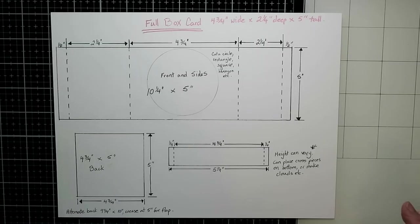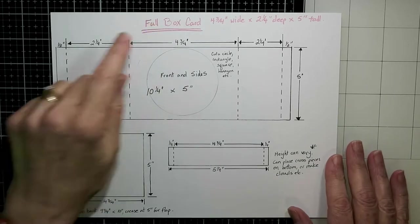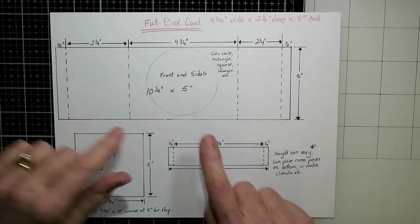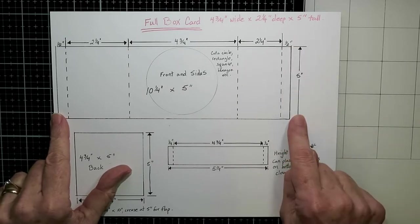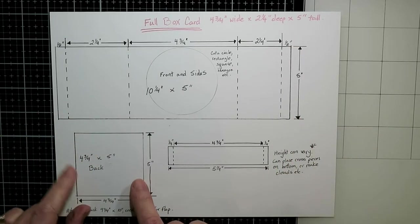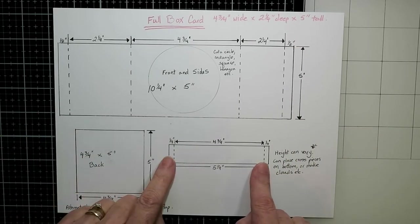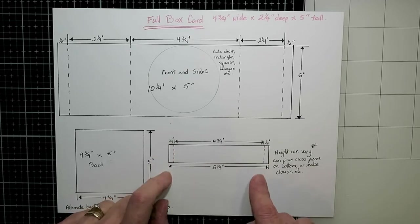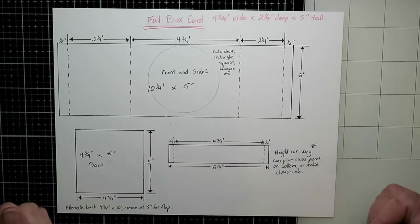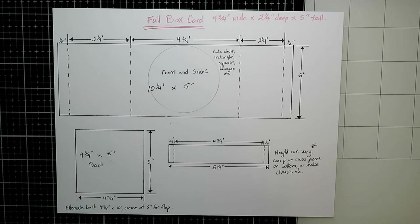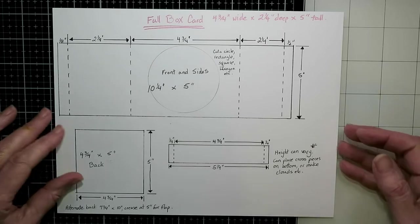So here is my little cheat sheet for myself. It's a full box card, it's four and three-quarter inches wide when it's done by two and a quarter inches deep by five inches tall. If you want, I would say just take a screenshot of that or pause and write the measurements down, but that would be the easiest.